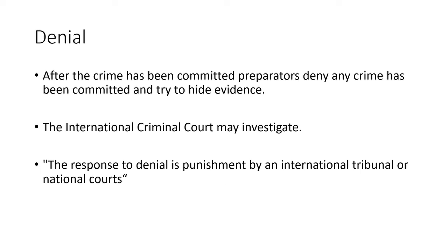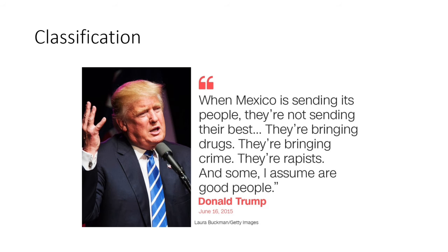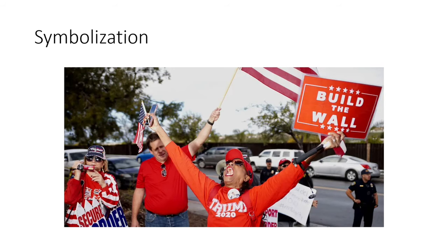Now let's look at a more modern case study where we can actually see the warning signs — Trump's America. From the beginning of Trump's candidacy in 2015, he classified Mexicans negatively, calling them drug dealers and rapists, trying to classify them as an 'other.' He has also symbolized them by targeting groups like the Dreamers and people with darker skin. The idea of the border wall has created a symbol of Mexicans as undesirables in the United States.